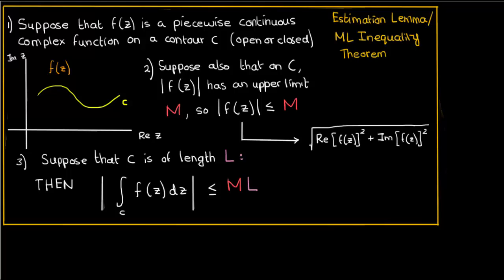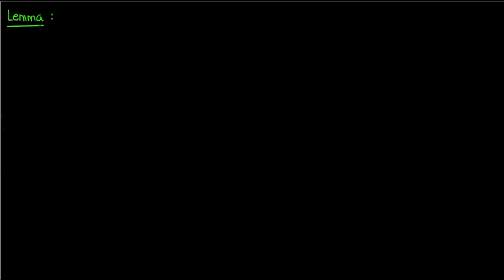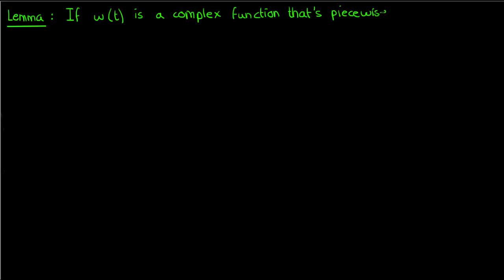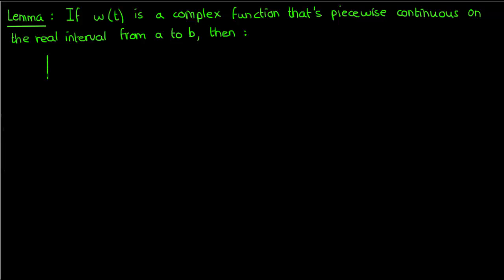Let's get to the proof by first demonstrating an initial result. We'll call this a lemma, which is kind of like a mini proof that's used as a stepping stone to something bigger. According to this lemma, if w is some complex function of t that's piecewise continuous on the interval from a to b, then the magnitude of the integral of w from a to b is less than or equal to the integral of the magnitude of w from a to b.